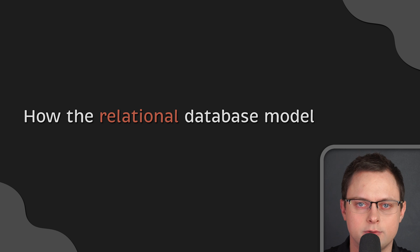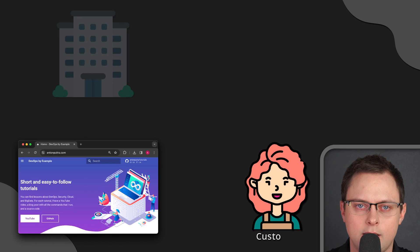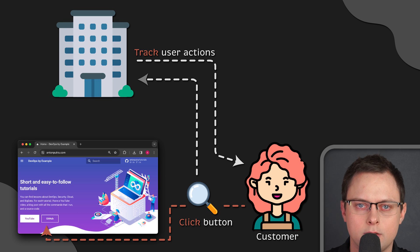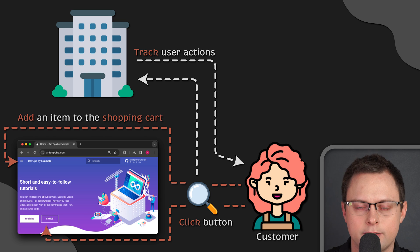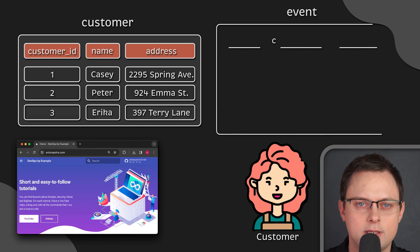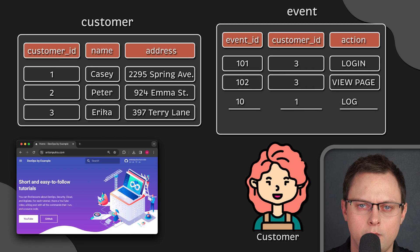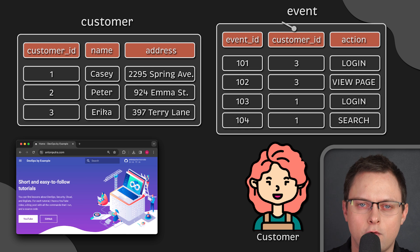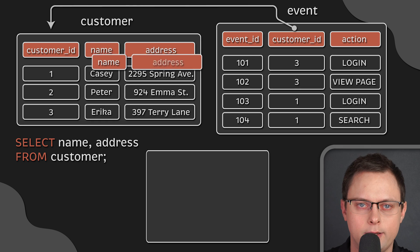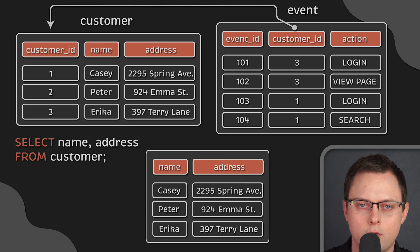Let's take a look at how the relational database model works in practice. Let's say we have a website and track every single action that a user may do — a user can click on a button, add an item to the shopping cart, and things like that. In a very simplified version, we would have a customer table and an event table. Each time a customer does something on the website, we would store it in the event table and use a foreign key to link the event to the customer. We can also use SQL to query our database — for example, you can use a query to get all the customers you have.